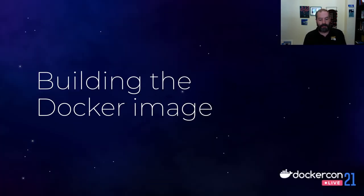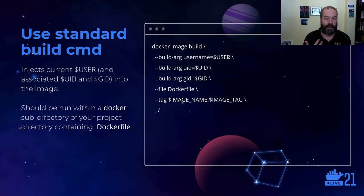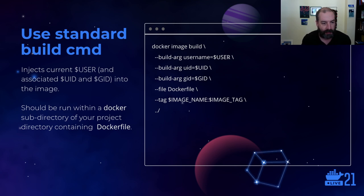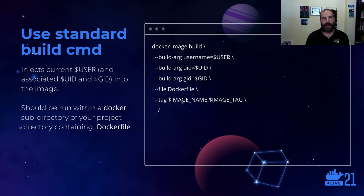Now that we've walked through writing the Dockerfile, building and running the image is standard. We use a standard build command with custom build args to inject the user UID and GID into the Dockerfile, then specify an image name and tag. The Docker build context is actually the parent directory of the directory in which this command is run — because in the template repo I keep all Docker-related files, including the Dockerfile and Docker Compose YAML, in a dedicated Docker directory within each project.